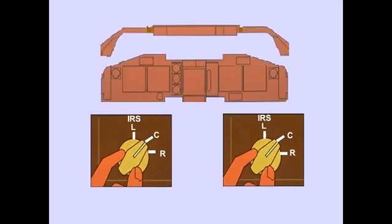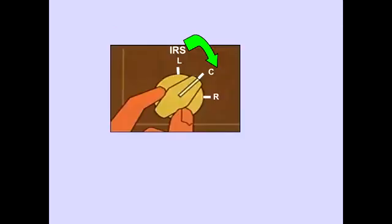The IRS source selectors are located on the forward panel. With the faulty left IRS, selecting the center IRS would restore the captain's instruments to normal operation.